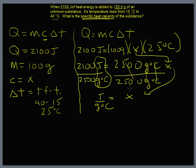And when we divide 2500 into 2100, we end up with 0 decimal 0 decimal 8 4 joules over grams degrees Celsius.